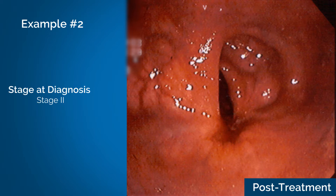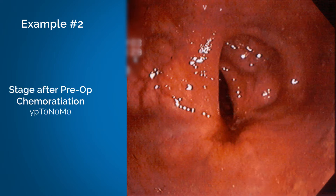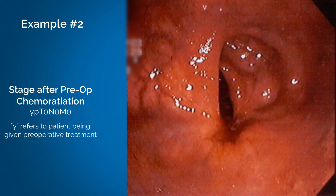At the time of diagnosis, the patient had stage 2 disease. But after preoperative chemoradiation, the patient's pathological stage is yPT0N0M0, where Y refers to the patient being given preoperative treatment. There are no tumors, nodes, or metastases involved in this pathological stage. This is classified as the extent of disease after treatment.